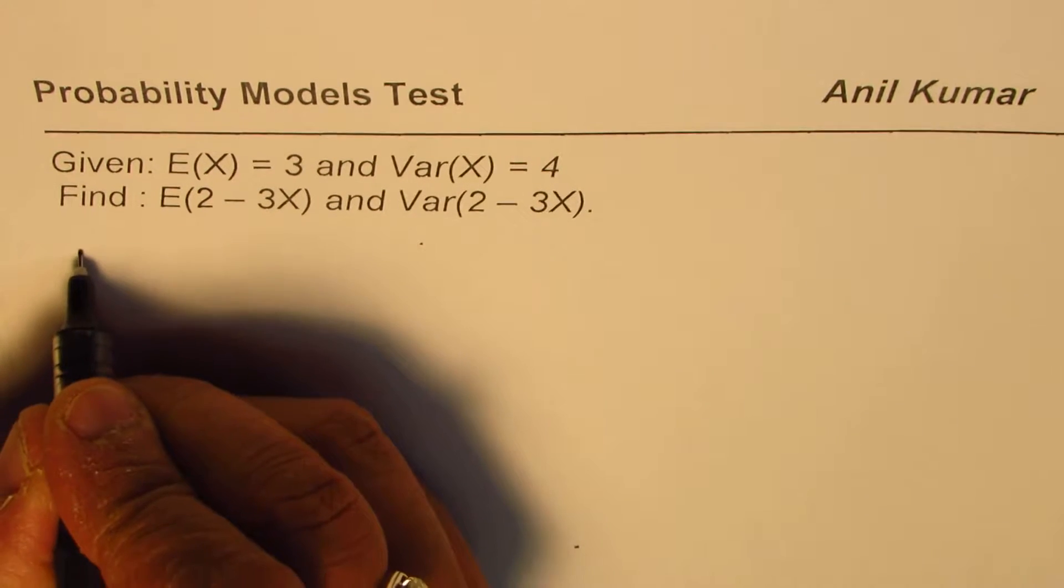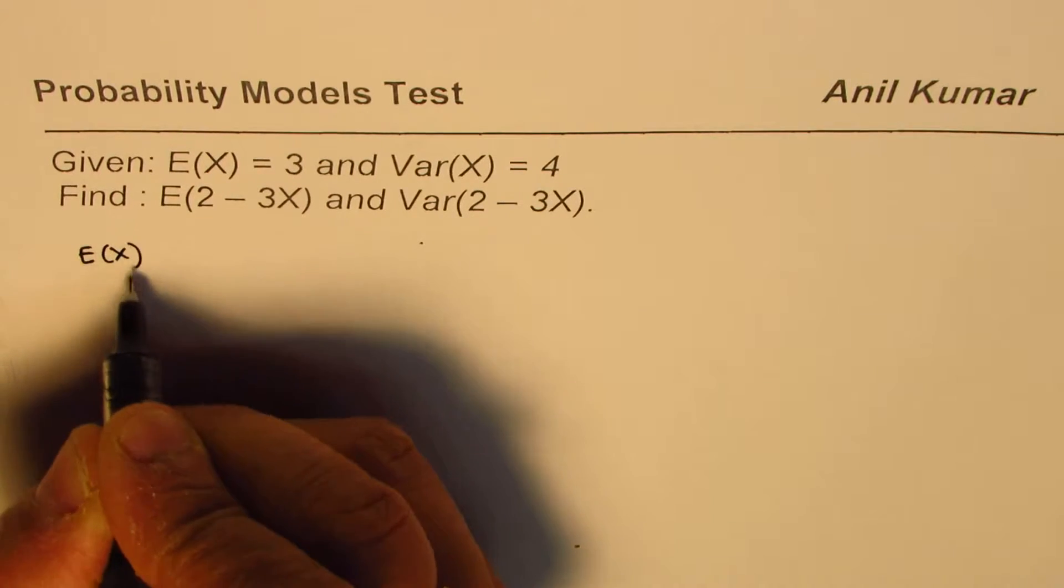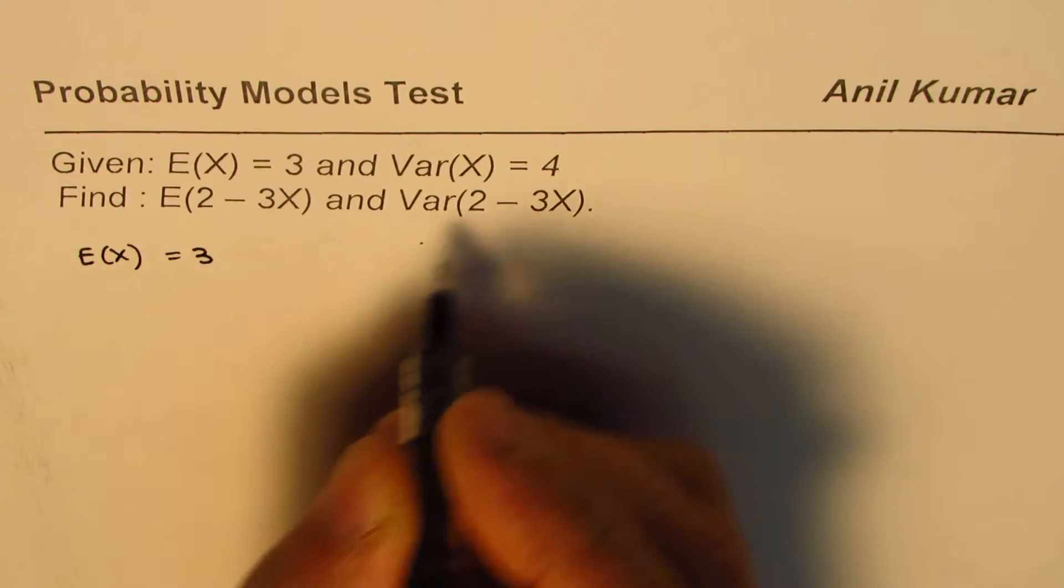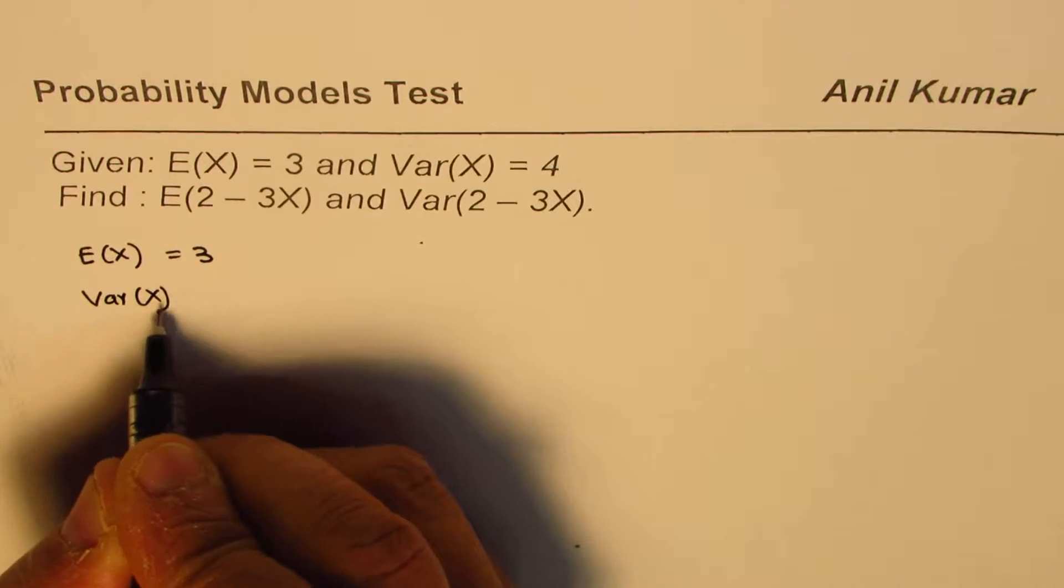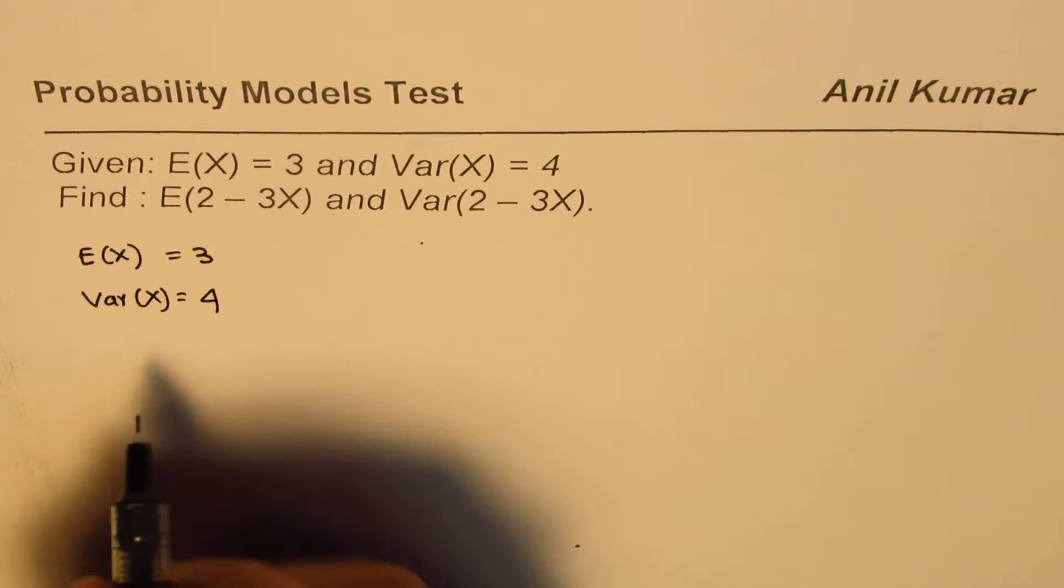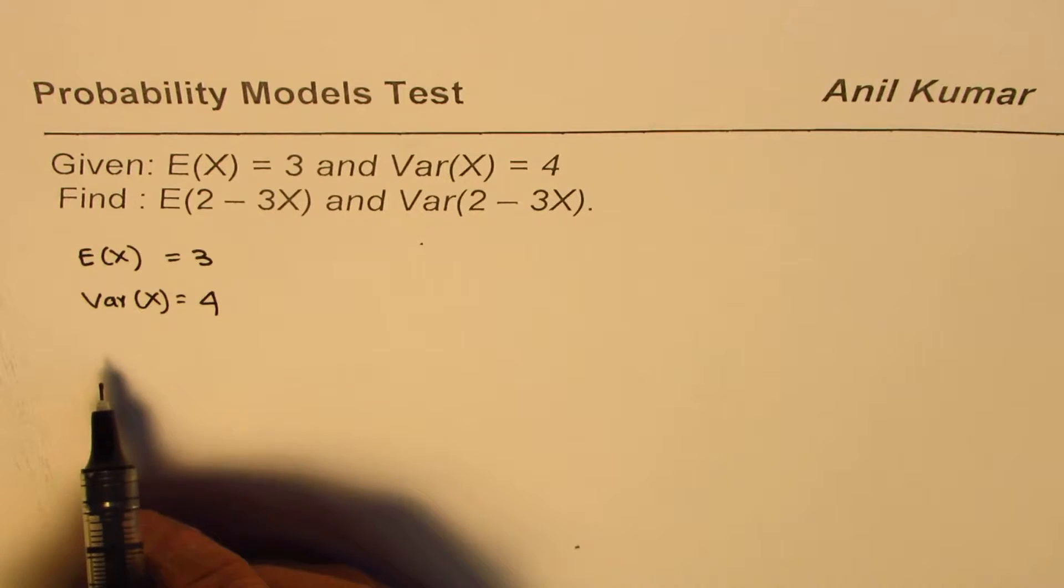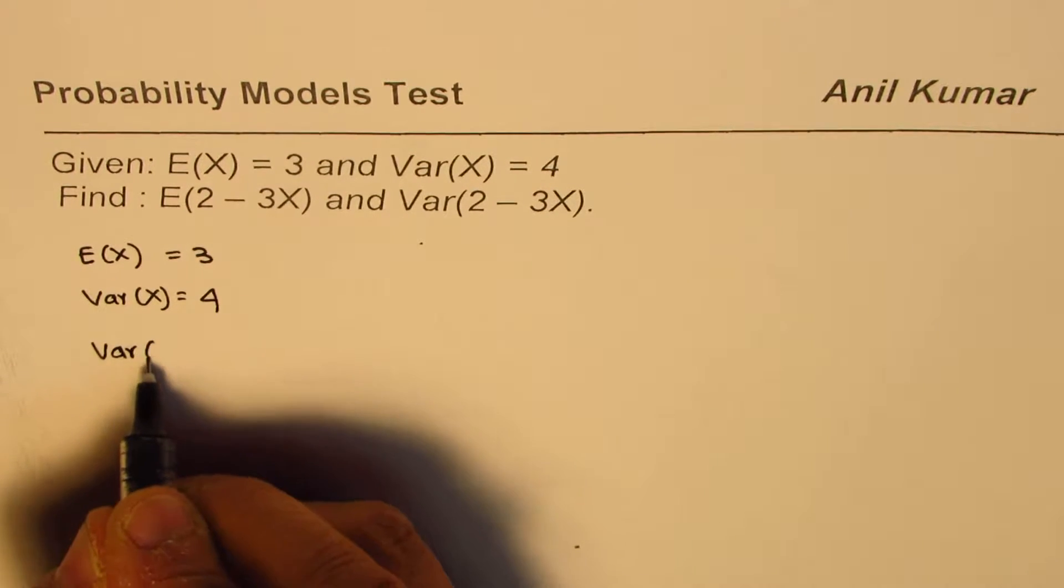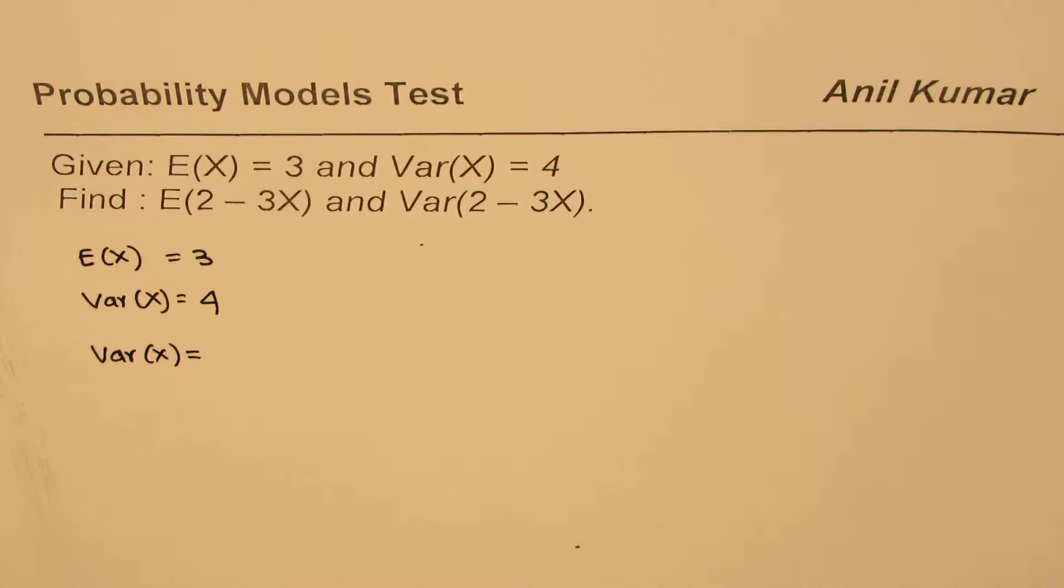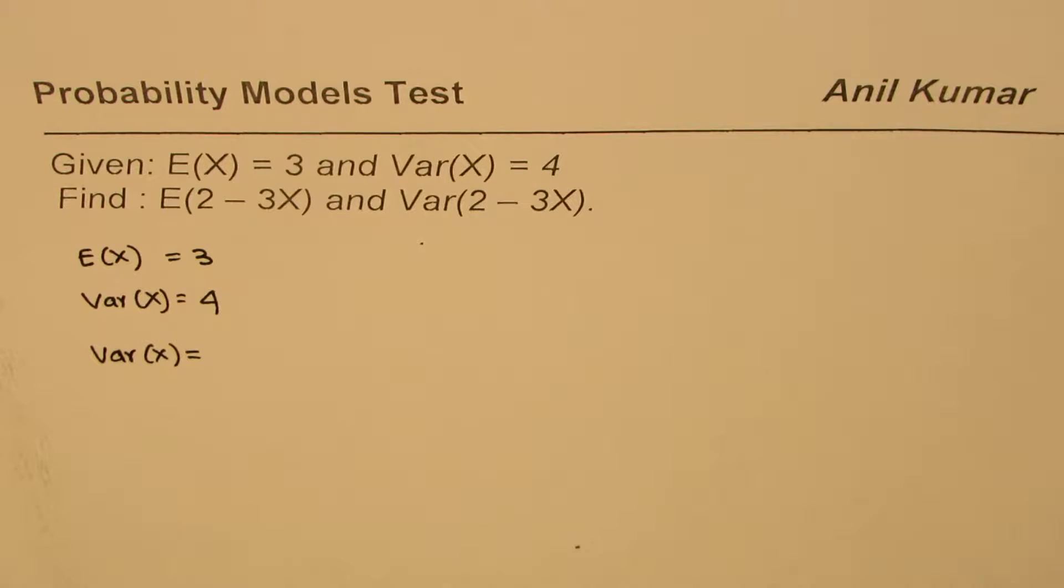Now, in this particular case, we are given that the expected value equals 3 and the variance equals 4. Now, how are these two related? We know variance is basically equals to mean of squares minus squares of mean.